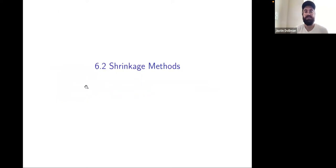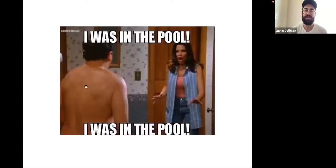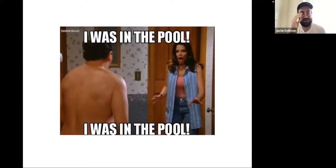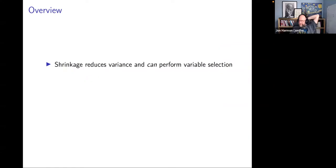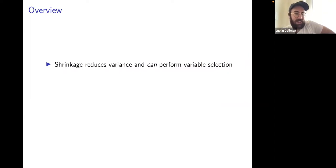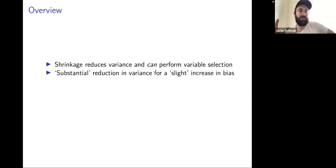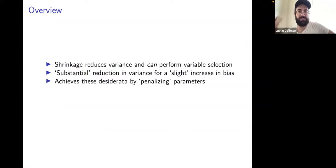Now we're in shrinkage methods — we're shrinking things. Shrinkage will reduce the variance and can perform variable selection. The book writes there's a substantial reduction in variance for a slight increase in bias, so the trade-off is good. It achieves these desiderata by penalizing parameters. Maximum penalization gives you the null model; no penalization gives you the OLS estimate; and you have the whole territory between those two.